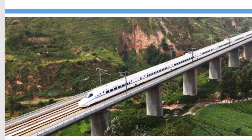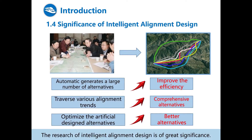Hello everyone. The automated railway alignment design has drawn many attentions from designers and scholars. Here comes the significance of intelligent alignment design. By using artificial intelligence technologies, the railway alignment design can be greatly improved, mainly from three aspects.